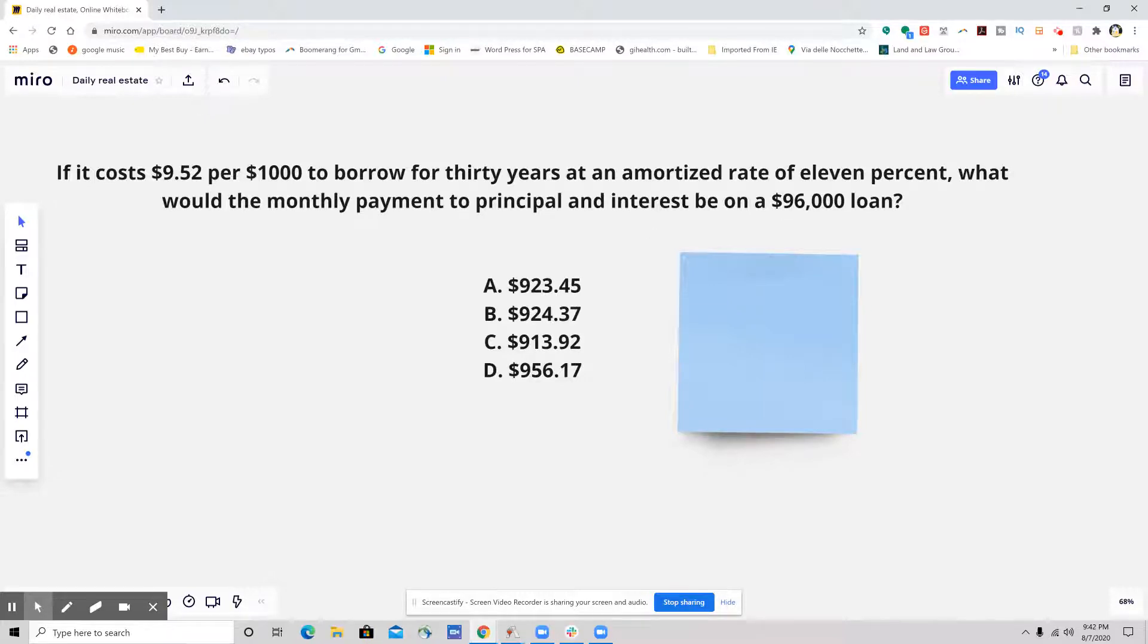So this one's really simple. If you didn't have this information, you would have to have an amortization table where you would look at the 11% in one column and the 30 years in the other column, and you would go to it in the amortization table and find $9.52 per $1,000.